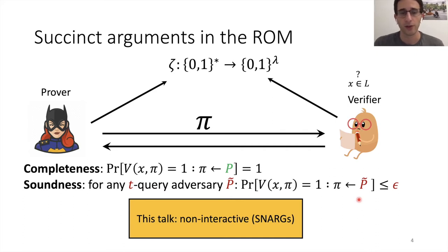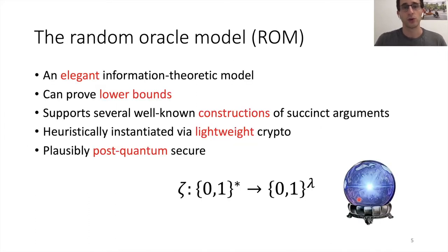In general, the definition talks about an interactive protocol and our results hold for interactive protocols, but for simplicity, most of the time, I'm gonna talk about succinct non-interactive arguments or for short SNARGs. So why are we focused on this random oracle model? Well, it's a very elegant information theoretic model. And because of such, it lets you prove lower bounds, which is usually quite hard to do outside this model and is what we do in this work.